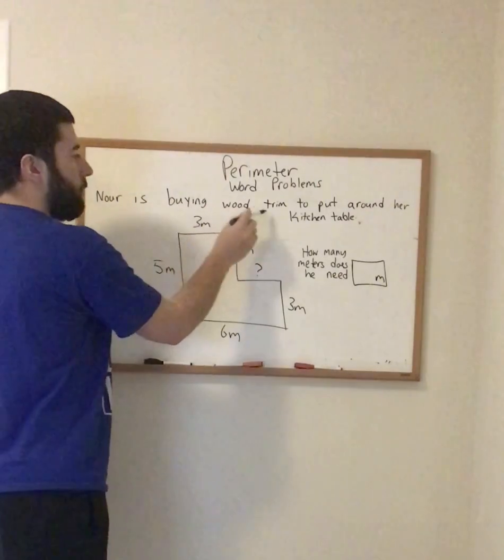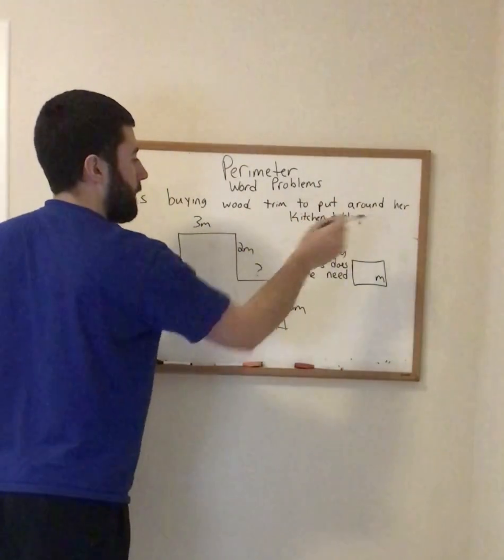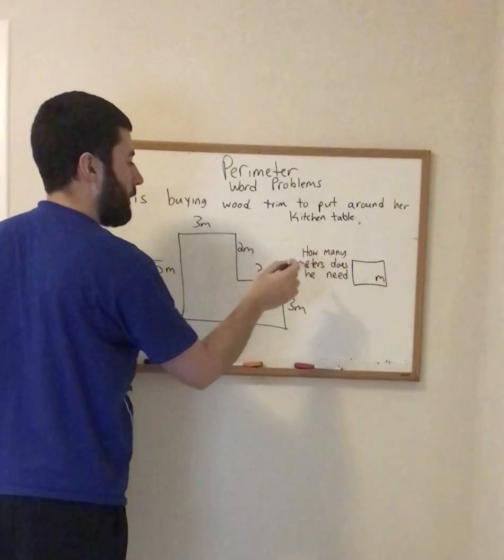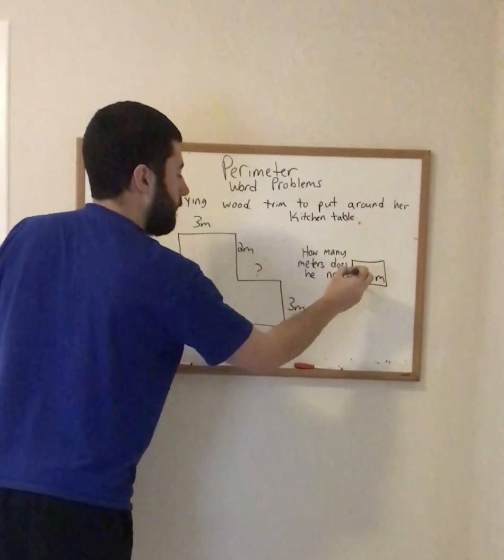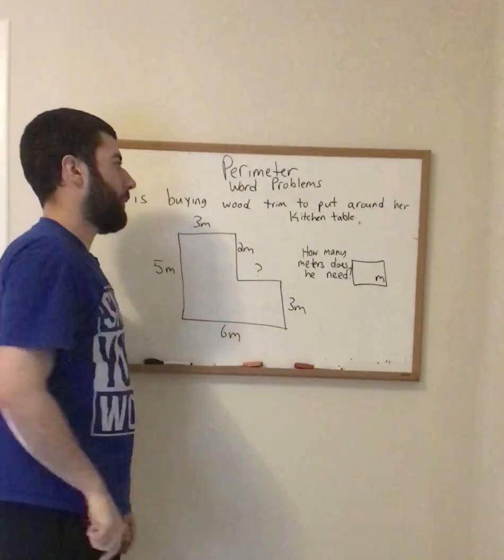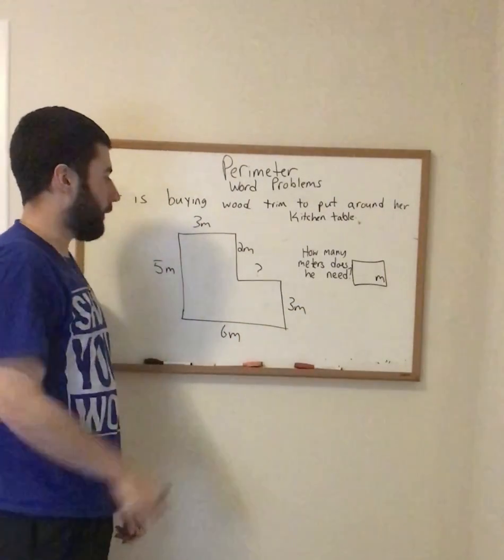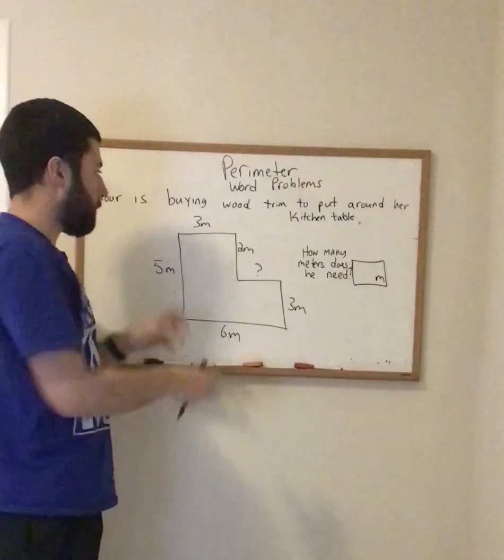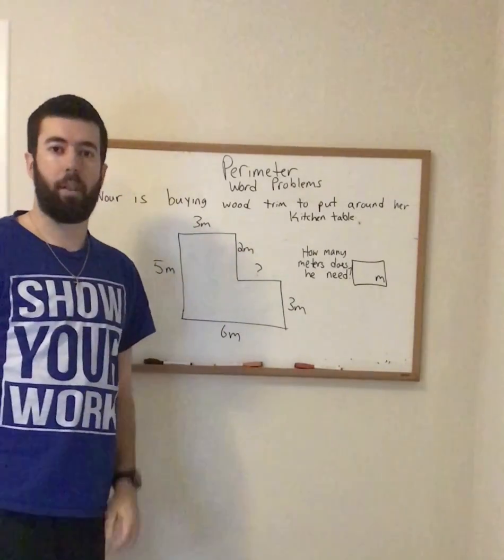So Noor is buying wood trim to put around her kitchen table. How many meters does he need? Put a question mark there. Okay, so we know we're buying wood trim to put around a kitchen table. So here's my kitchen table. I know I'm trying to put wood around my kitchen table.